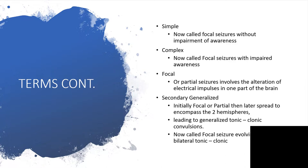Focal or partial seizures involves the alteration of electrical impulses in just one part of the brain. But we could have focal then becoming secondary generalized. That will include initial focal or partial then later spreads to encompass the two hemispheres. That might be leading to generalized tonic-clonic convulsions. That is now called focal seizures evolving to bilateral tonic-clonic seizures.